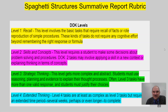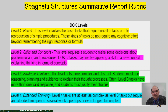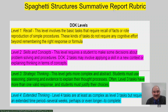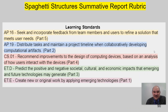Our spaghetti structure summative — the rubric — you have access to it. I'm going to go through sections rather than clicking the link here, but it is hot linked if you need it. There are four depth of knowledge levels: level one is recall, worth one or zero points; level two is skills and concepts; level three is strategic thinking, getting more abstract; and level four is extended thinking. That's why we have those class discussions — to help you get better answers.